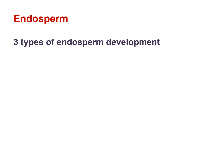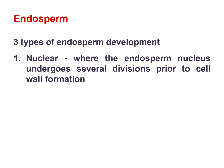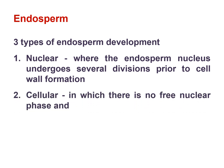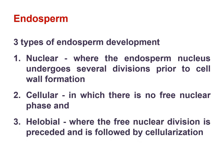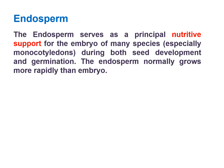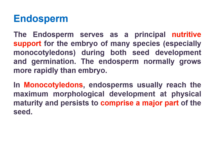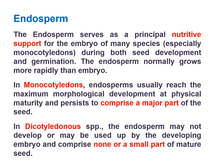Endosperm: There are three types of endosperm development. Nuclear: the endosperm nucleus undergoes several divisions prior to cell wall formation. Cellular: there is no free nuclear phase. Helobial: free nuclear division is preceded and followed by cellularization. The endosperm serves as the principal nutritive support for the embryo during both seed development and germination. It normally grows more rapidly than the embryo. In monocotyledons, the endosperm usually reaches maximum morphological development at physical maturity and persists as a major part of the seed. In dicotyledon species, the endosperm may not develop, or may be used up by the developing embryo, comprising none or a small part of the mature seed.